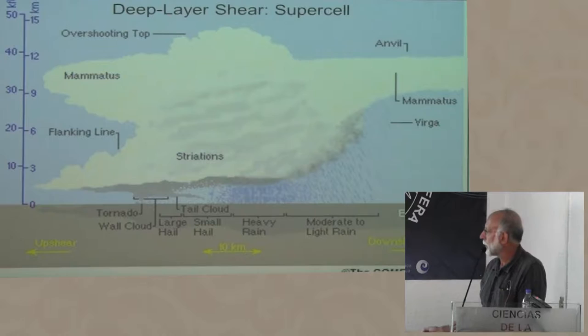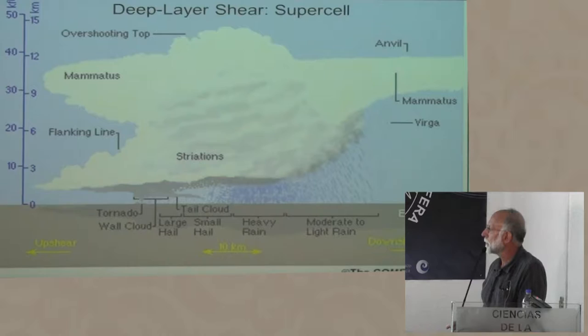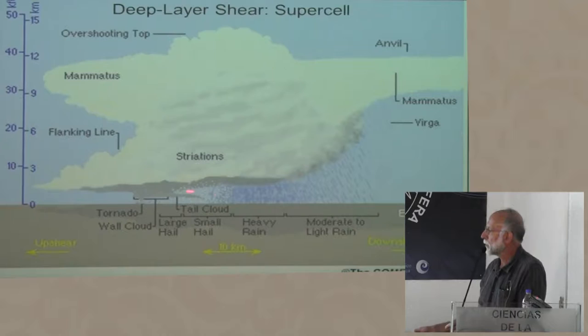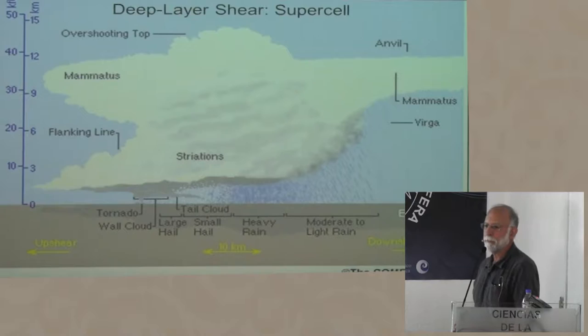Here's a view of the typical supercell storm with striations that indicate rotation, an anvil out the top, an overshooting top into the stratosphere, and sometimes mammatus underneath the anvils. If a tornado is going to occur, it usually occurs right here between the rainy part — displaced into the page — and the inflow coming from your back. This picture goes back to the 1960s, and by the 1970s it was pretty well established due to many people going out and making systematic eyewitness observations of thunderstorms.